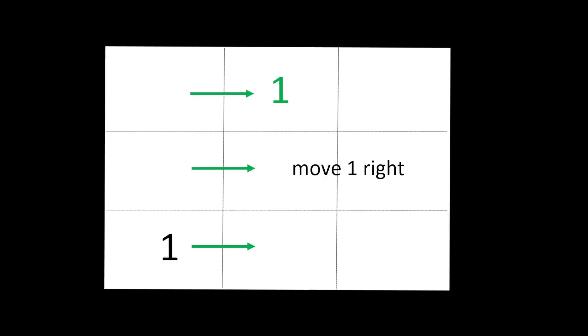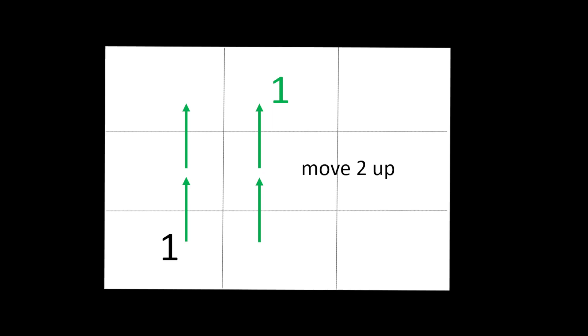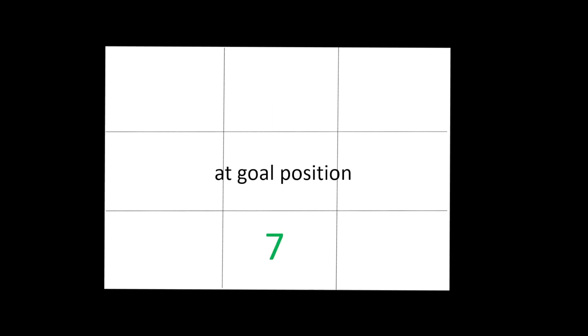Here we've got the one tile in the bottom left corner and its goal is the middle at the top. As far as moves go, we know we have to move it one to the right and two up. Seven here is at the goal position so it doesn't need to move.